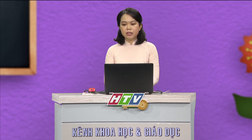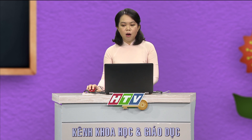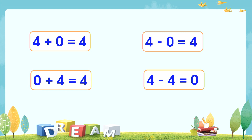Tiếp theo, các em sẽ thực hiện các phép tính sau. Cô mời các em bắt đầu làm bài. Đã hết giờ rồi, bây giờ mình cùng lắng nghe đáp án của cô nhé. Nhìn vào các phép tính, các em lưu ý: một số cộng với 0 cũng bằng chính số đó, như phép tính 4 cộng 0 bằng 4. Một số trừ đi 0 cũng bằng chính số đó, như phép tính 4 trừ 0 bằng 4. Một số trừ đi chính nó thì bằng 0, ví dụ 4 trừ 4 bằng 0.